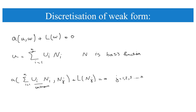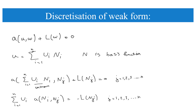The bilinear term a is expressed as the sum over u_i times N_i, for i from 0 to n, and N_j, where u_i are the unknowns. With j from 1 to n, we have n equations. Since the bilinear term is linear, we can factor out the summation over u_i, leaving a(N_i, N_j) and the linear term l(N_j). We have n unknowns and n equations, which forms a system of linear equations solvable by matrix inversion.